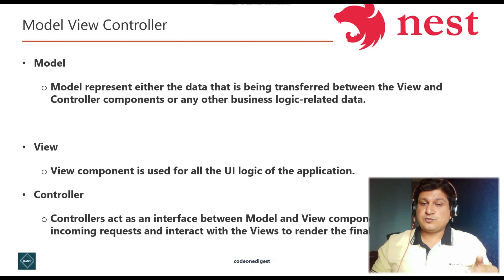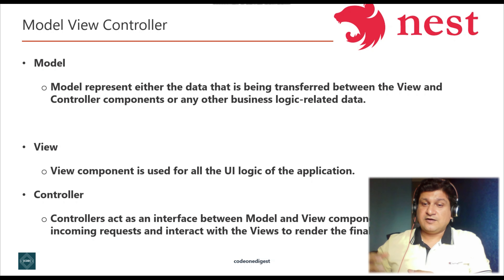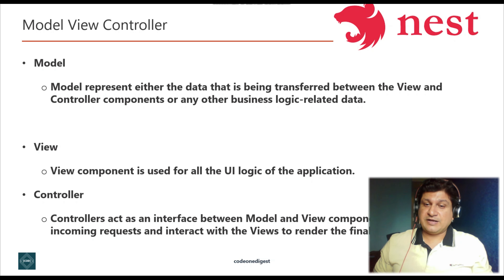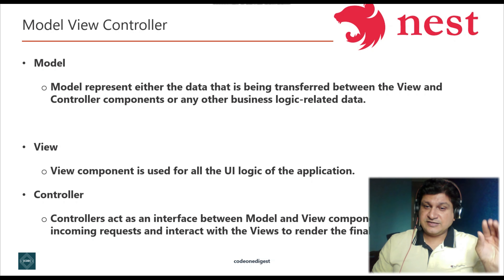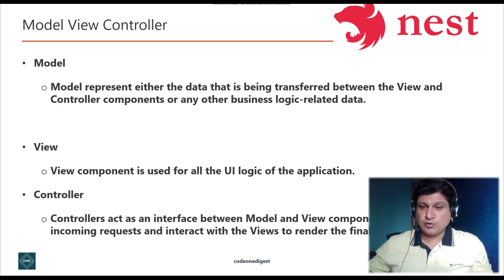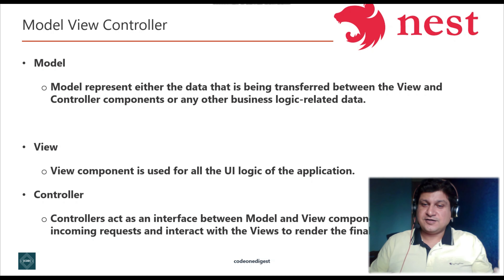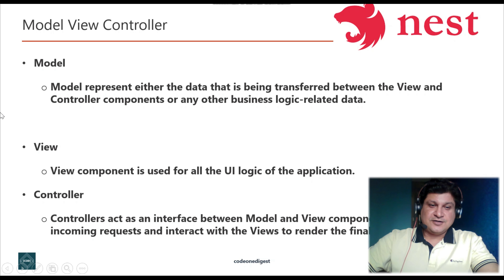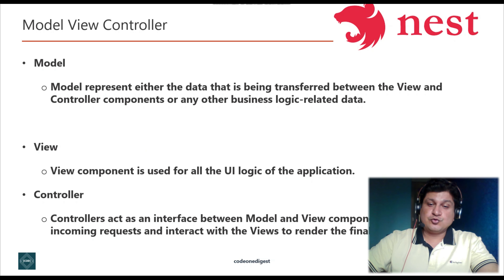Your controller will get data from the business layer and repository layer, prepare a data object, and decide which particular view is going to render this data. You may have many pages in your application — home page, login page, product listing page, product detail page, and more. Controller will decide which view this model data is rendered on. Controller acts as an interface between the model and view components to process all incoming requests and render the final output.